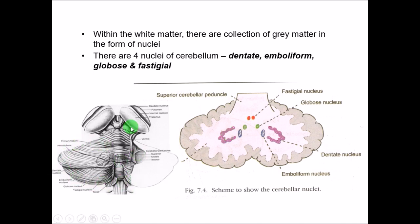In a cut section of the cerebellum, you can see the grey matter outside as the cerebellar cortex with fissures and foliae, and deep inside is the white matter. Within the white matter there are collections of cell body neurons forming nuclei. The dentate nucleus is the outermost and largest, then deeper are the emboliform, then the globus, and finally the fastigial nucleus.